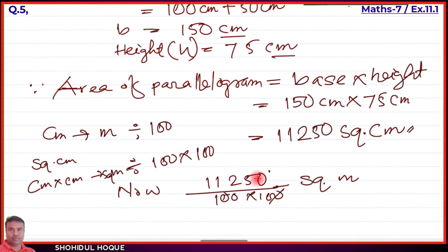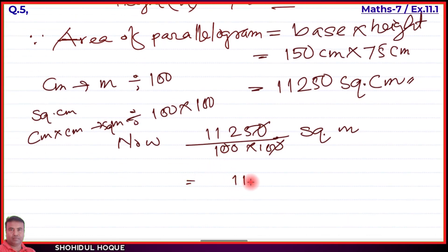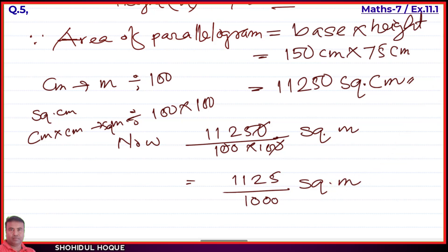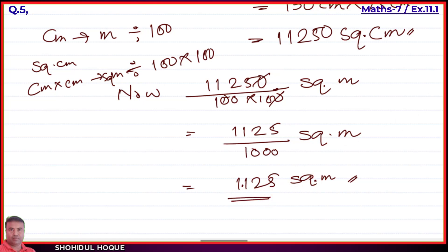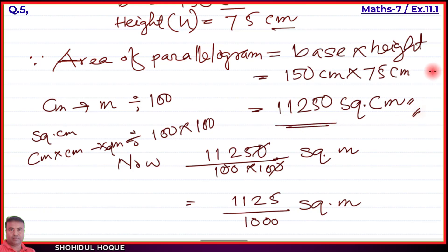After dividing 11,250 by 10,000, we cancel the zeros and get 1.125 square meters. So if the answer is required in square meters, the answer is 1.125 square meters. Question number 5 is done.